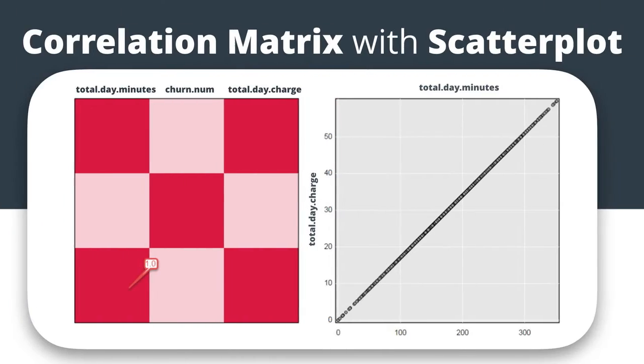On the left hand side, we have a correlation matrix that visually represents the Pearson correlation values between the different variables. If we look at this, we can see the total day charge and the total day minutes has a very bright red block, meaning those variables are highly positively correlated. The values associated with it are also one, meaning they are perfect positive correlators.